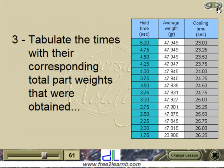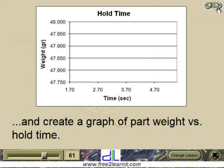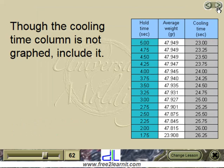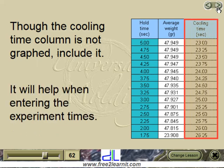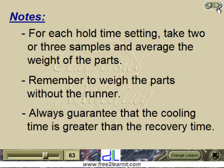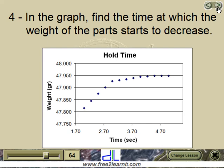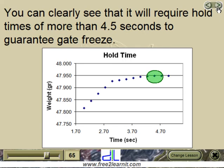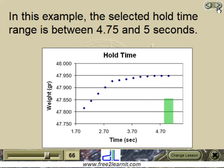Step 3: tabulate the times with their corresponding total part weights and create a graph of part weight versus hold time. Though the cooling time column is not graphed, include it — it will help when entering the experiment times. For each hold time setting, take two or three samples and average the weight of the parts. Remember to weigh the parts without the runner. Always guarantee that the cooling time is greater than the recovery time. Step 4: in the graph, find the time at which the weight of the parts starts to decrease. In this example, hold times of more than 4.5 seconds are required to guarantee gate freeze, and the selected hold time range is between 4.75 and 5 seconds.